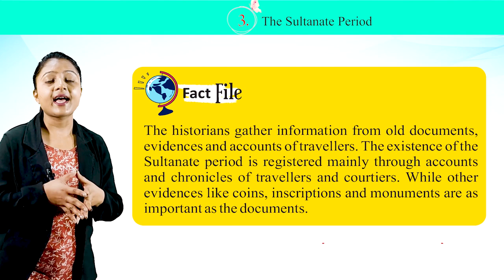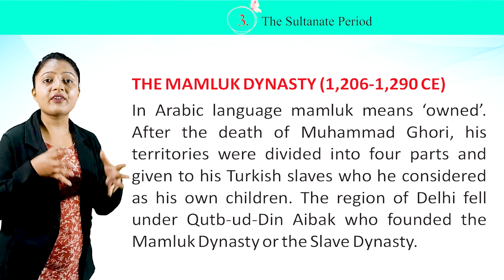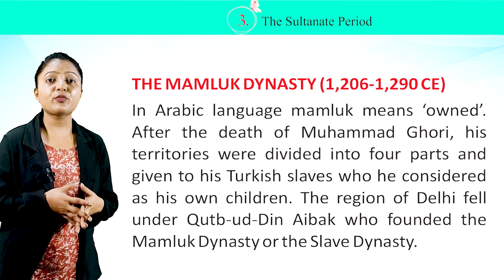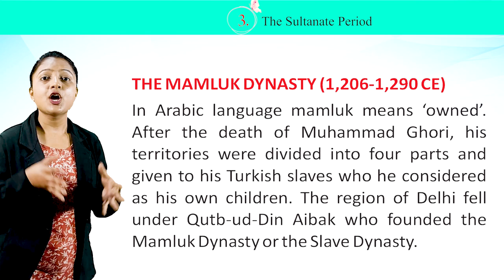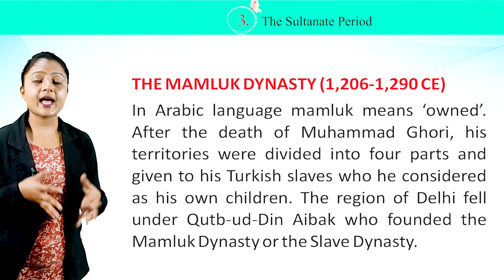The Mamluk Dynasty, 1206–1290 CE. In Arabic, Mamluk means 'owned.' After the death of Muhammad Ghori, his territories were divided into four parts and given to his Turkish slaves, whom he considered his own children. The region of Delhi fell under Qutubuddin Aibak, who founded the Mamluk dynasty, also known as the slave dynasty.